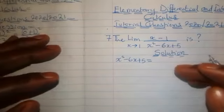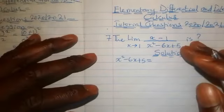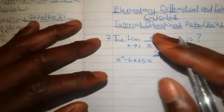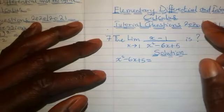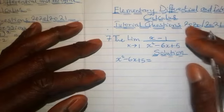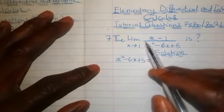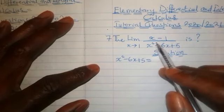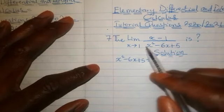Now in this seventh question under the tutorial questions 2020-2021, and these questions are drawn from elementary differential and integral calculus, we are asked to evaluate this limit as x tends to 1 of (x-1) all upon x²-6x+5.